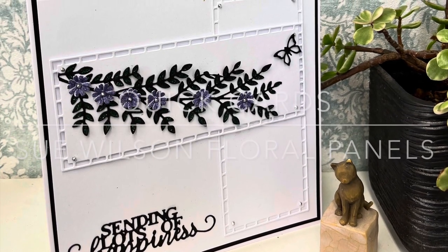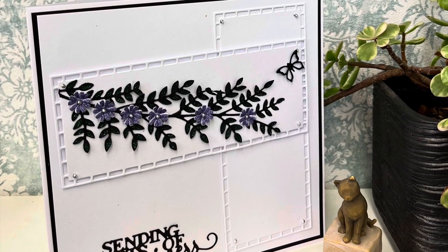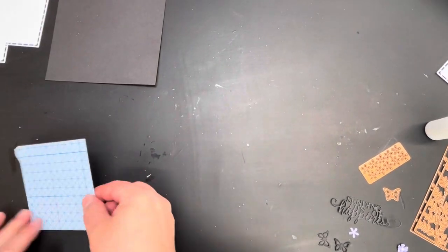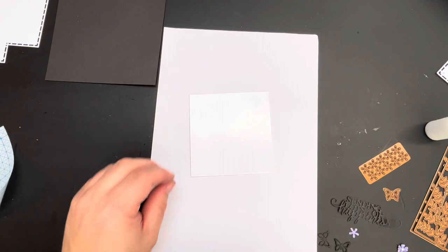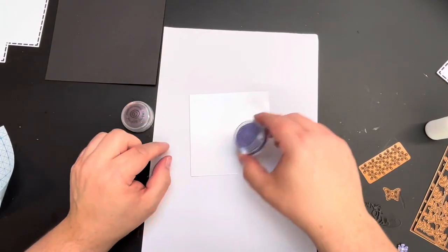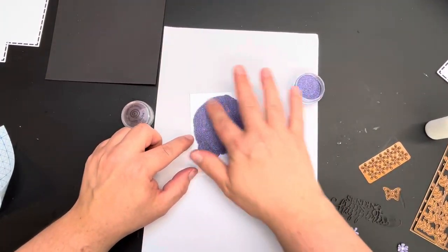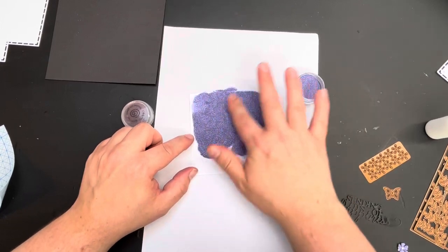Hello all, Jamie Rogers here today for a very quick video with a lovely set of dies by Sue Wilson. We're going to be playing around with some of the floral panel dies. First of all we need a self-adhesive piece of card, so I've used a self-adhesive sheet placed onto a piece of card and I've removed the top layer.